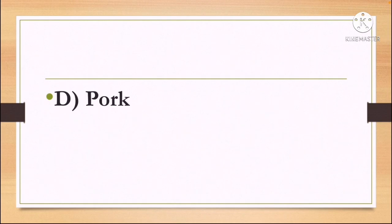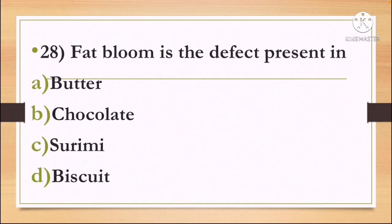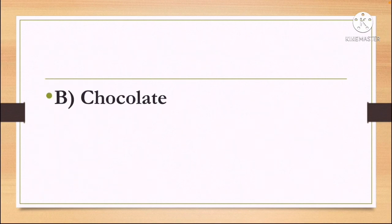Next question: fat bloom is a defect present in — Option A: Butter, Option B: Chocolate, Option C: Surimi, and Option D: Biscuit. The correct answer is Option B, Chocolate.